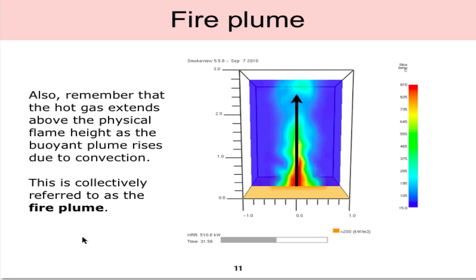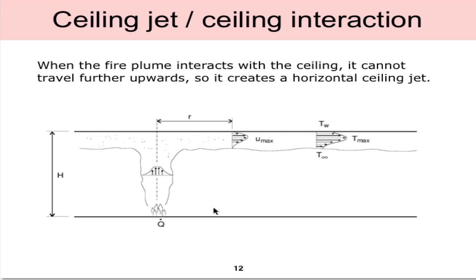Moving on, we remember that the fire plume is not just limited to the physical flame, but that due to buoyancy, the hot gas is traveling upwards, and we collectively refer to these three regions as the fire plume. So what happens if we introduce a ceiling as in an enclosure? The hot gases traveling upward due to buoyancy can no longer travel upwards, so it creates this horizontal ceiling jet that travels in all directions. We have a velocity profile, a temperature profile, all in the ceiling jet, and outside of this area is assumed to be ambient conditions.